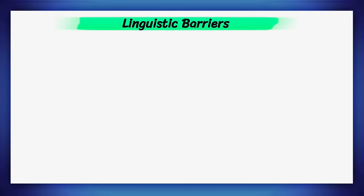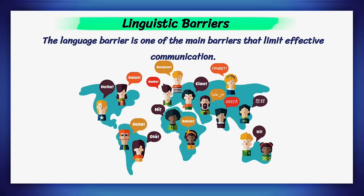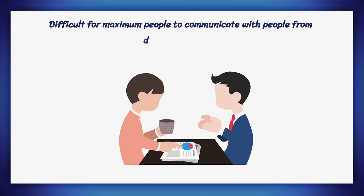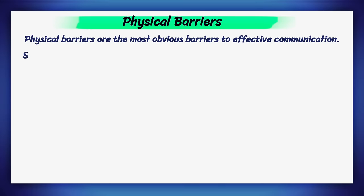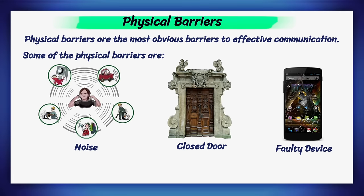Linguistic barriers: the language barrier is one of the main barriers that limit effective communication. The most commonly employed tool of communication is language, and every major region has its own language. That's why it is difficult for many people to communicate with people from different regions. Physical barriers are the most obvious barriers to effective communication. Some of them include noise, closed doors, and faulty equipment used in the communication process. Most of these barriers can be removed.